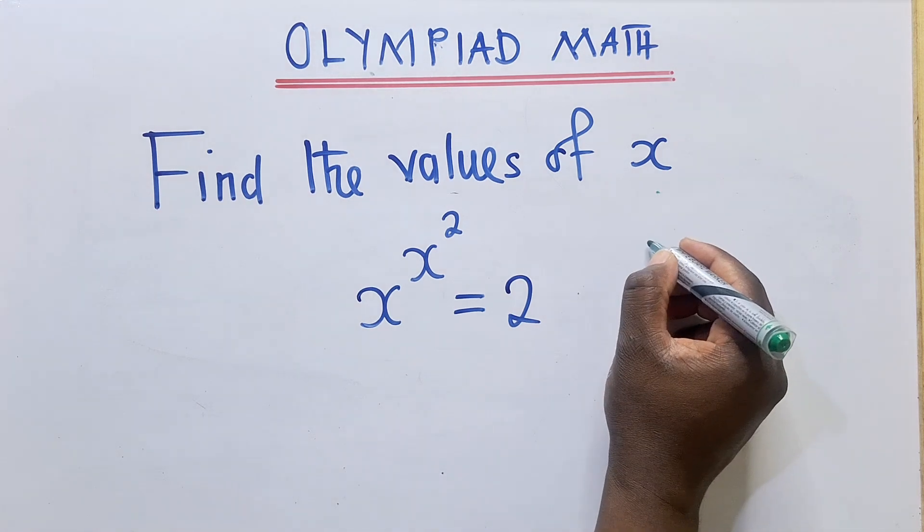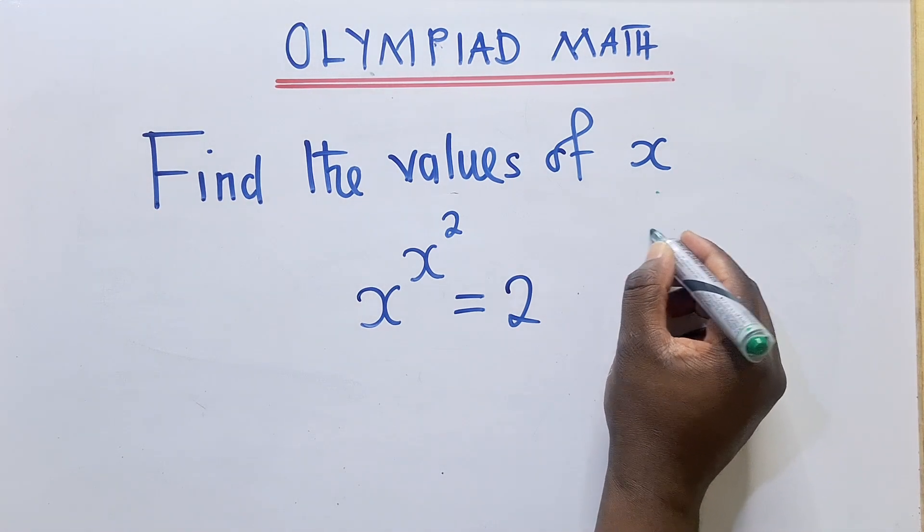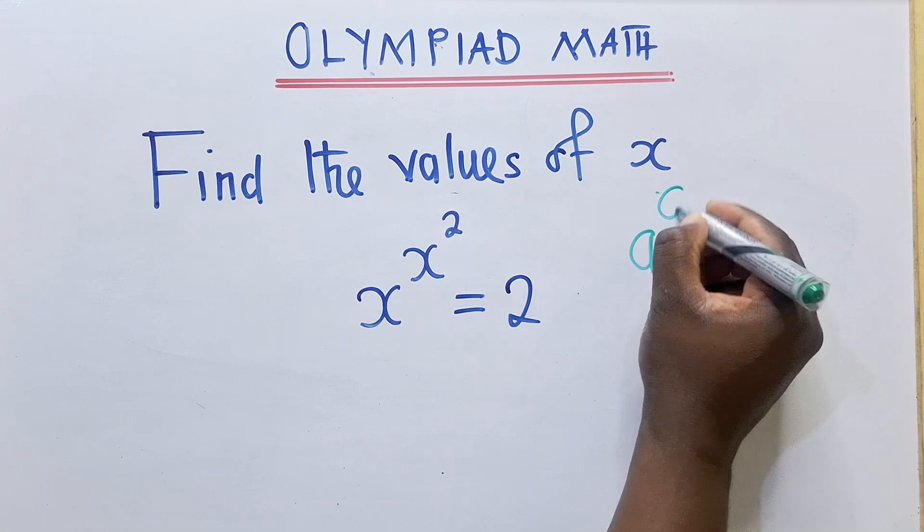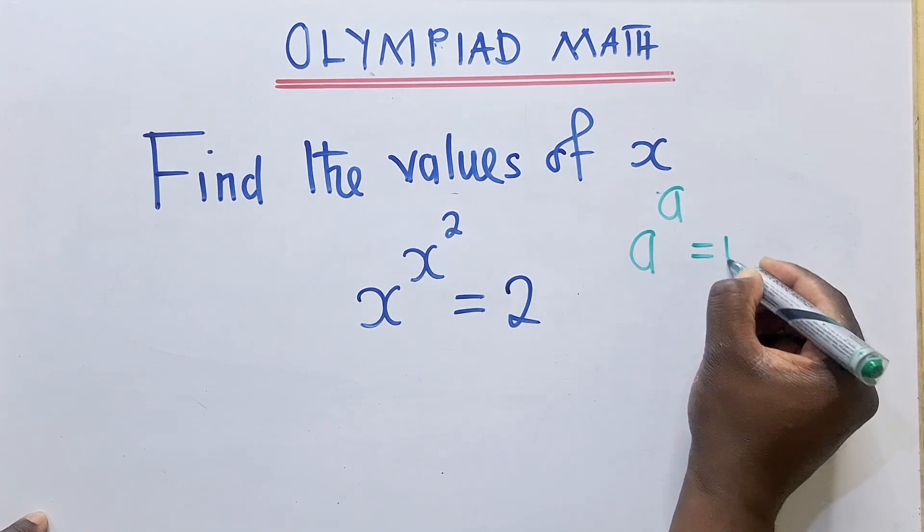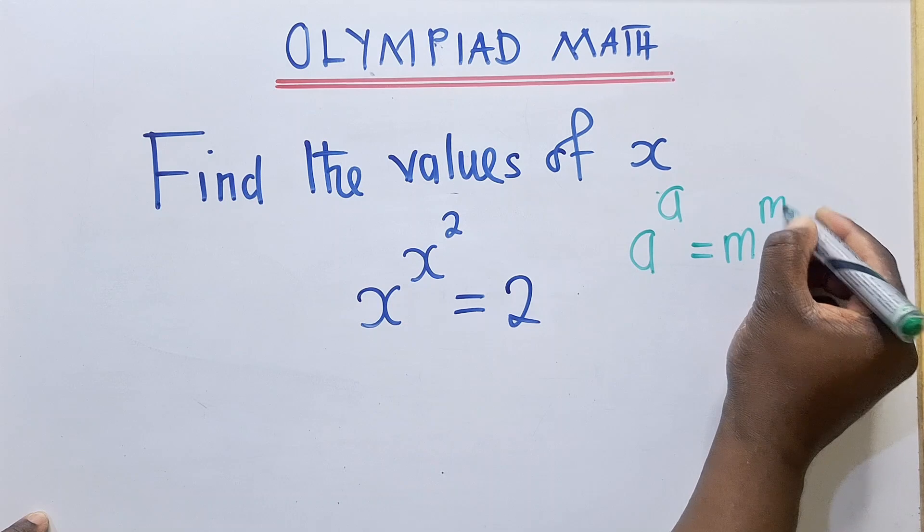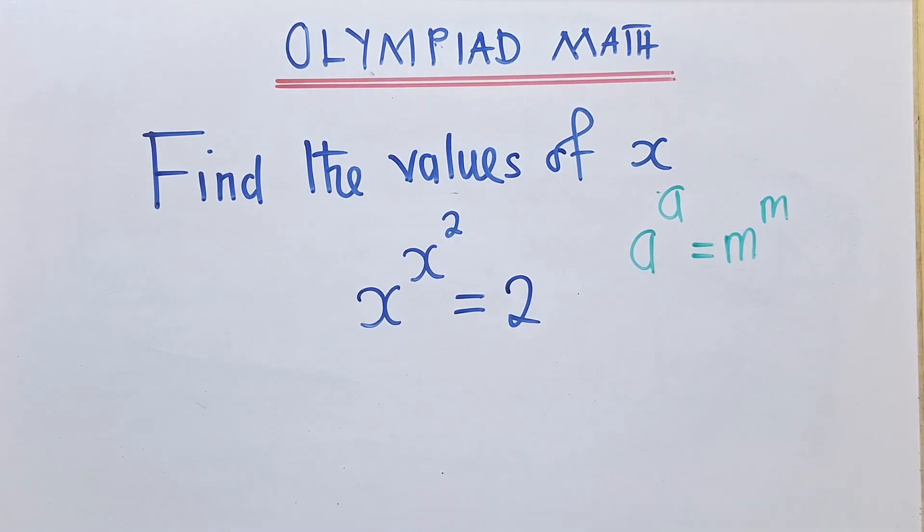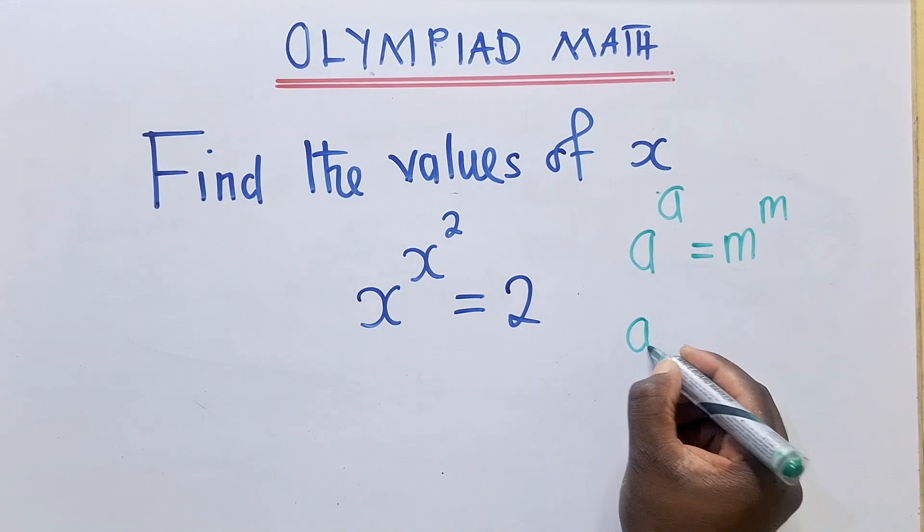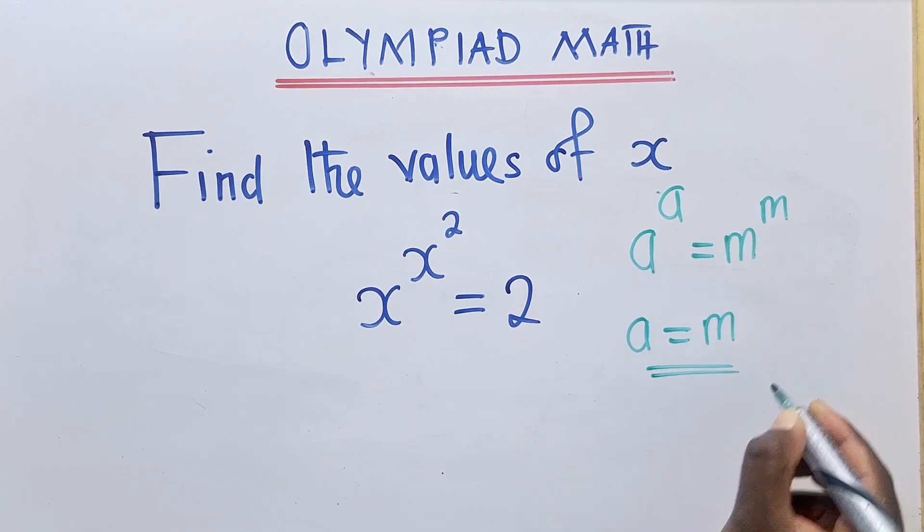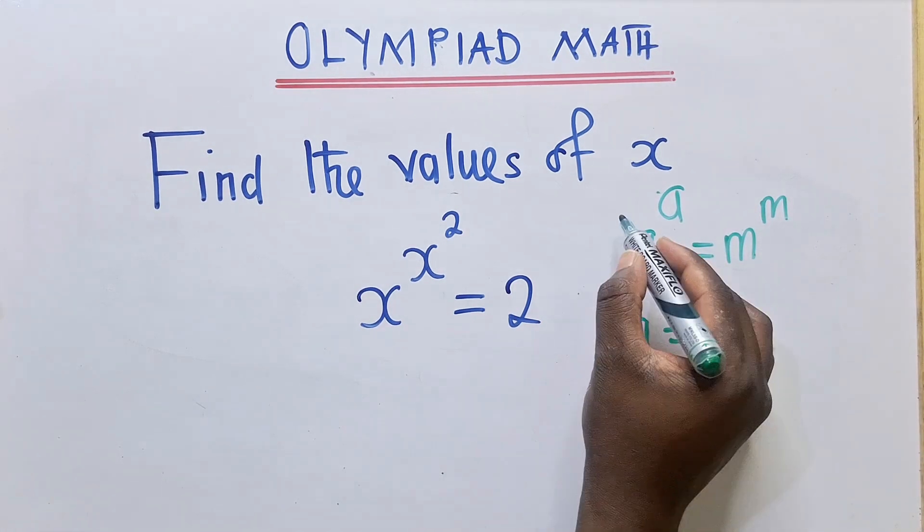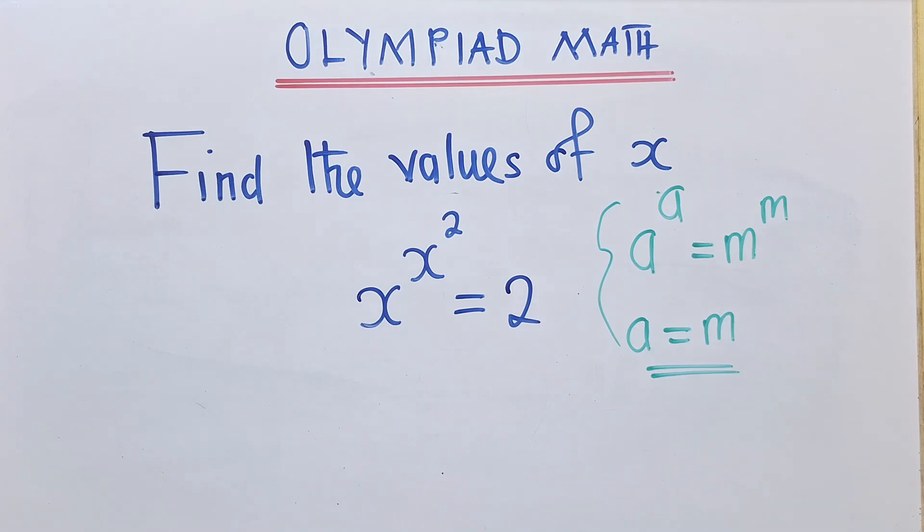Alright, so the property that we need to apply here looks like this. When you've got a^q equals m^q, so the same thing on this side is equal to the same thing on this side, this simply means a is equal to m. So keep this in your mind, and this is what we shall use right over here.